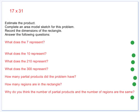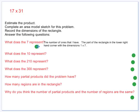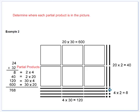Okay, so let's start answering our questions. The first one is, what does the 7 represent? 7 represents the number of 1's that we have. The part of the rectangle in the lower right-hand corner with the dimensions of 1 by 7. Here's your lower right-hand corner. We would have only one row of our dots, but they would be 7 tall.